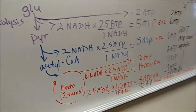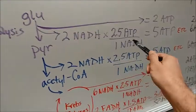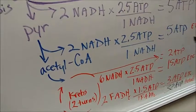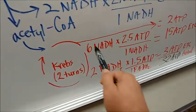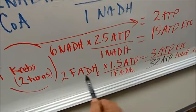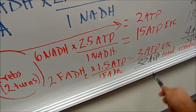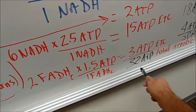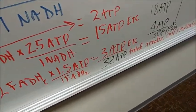And so, as you will notice, 2 times 2.5 is 5. 2 times 2.5 is 5. And down in the Krebs cycle, 6 times 2.5 is 15. 2 times 1.5 is 3. We get a total count of 32 ATPs.